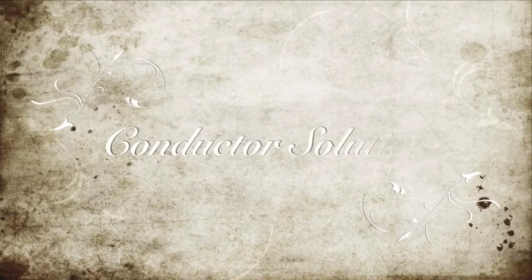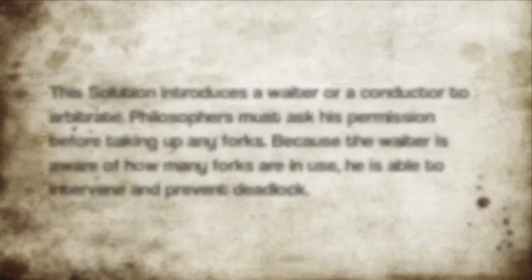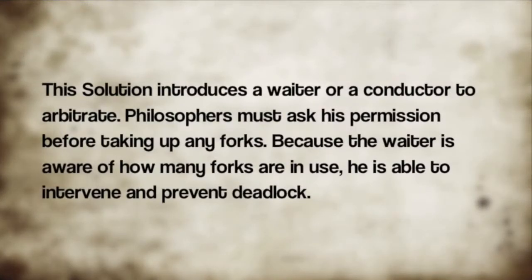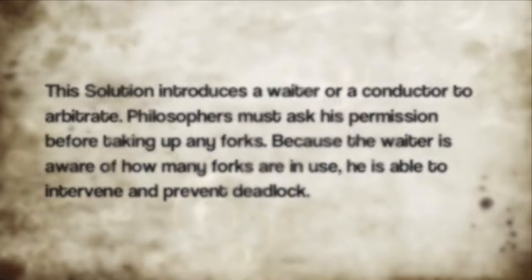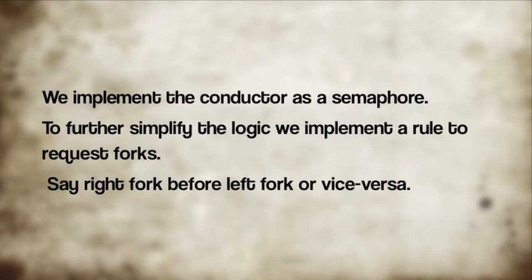One solution for this problem is called the conductor's solution. It introduces a waiter or conductor to arbitrate. Philosophers must ask his permission before picking up any forks. Because the waiter is aware of how many forks are in use, he can intervene and prevent deadlock. We implement the conductor as a semaphore, and also implement a rule to request forks — say, right fork before left fork, or vice versa.